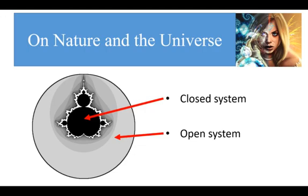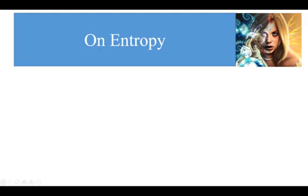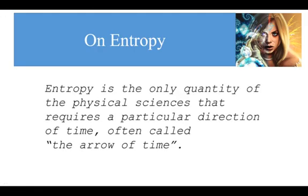What does all of this have to do with entropy? Clearly, entropy as a dissipative phenomenon does not apply to open, closed systems. In other words, the standard thermodynamic definition of entropy does not apply to nature. From Wikipedia: entropy is the only quantity of the physical sciences that requires a particular direction of time, sometimes called the arrow of time. So entropy has an arrow — and so does time, of course, as we experience it.